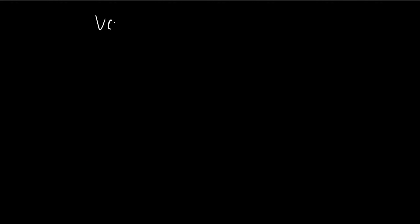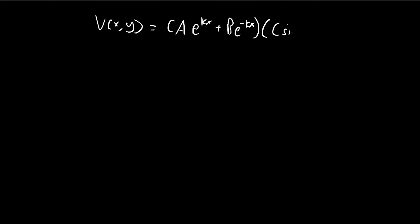The first step: we need to find the potential. Using separation of variables, you can arrive at the conclusion that the potential has to look something like this general form. I'm not going to derive this step — you can see it in the example. So this is just from separation of variables. The next step is to simplify this expression using our boundary conditions.